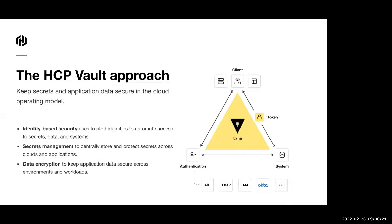What's the difference between saying this IP address is able to fetch that secret versus saying this application — which might have a pool of infrastructure — I want to authenticate that application versus authenticating an IP address? That's where this concept of identity-based security comes in: authenticating the application versus some hard-coded address. A core feature of Vault is secrets management, and it also has capabilities around protecting data using data encryption.